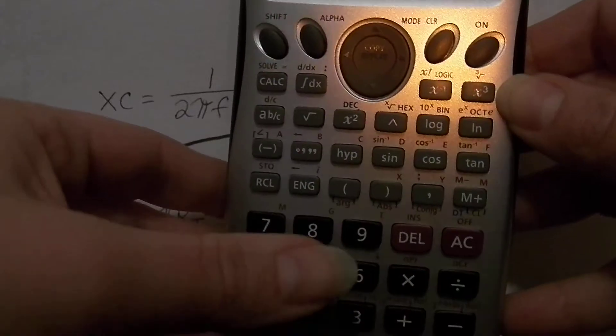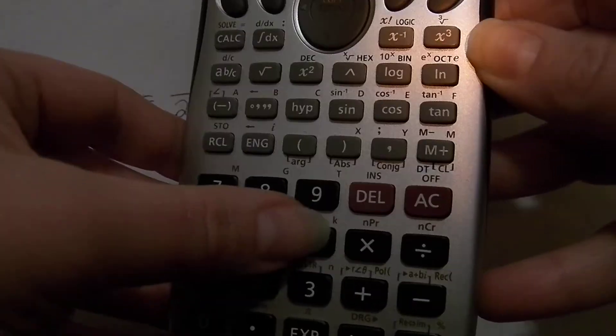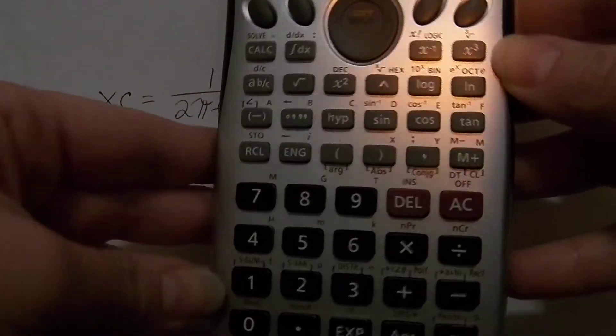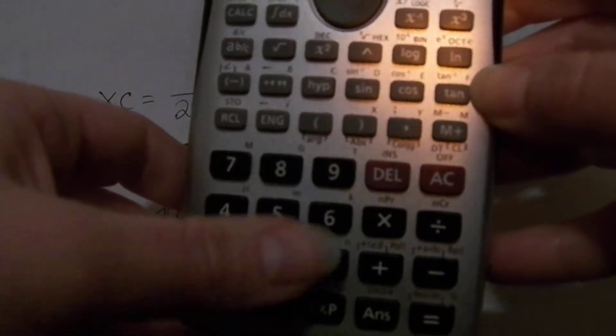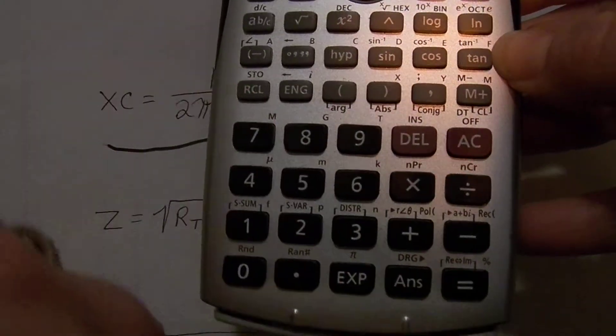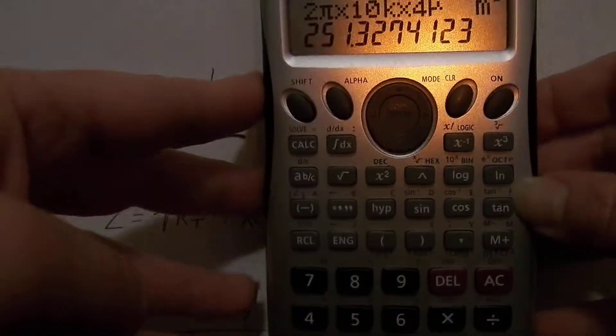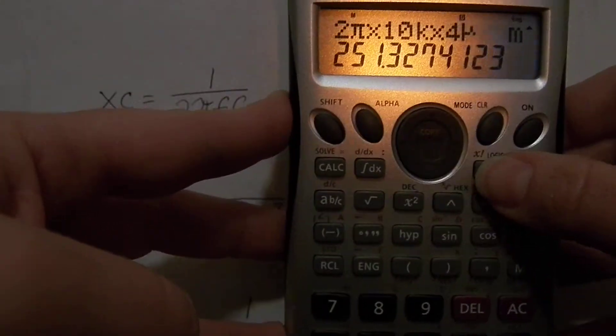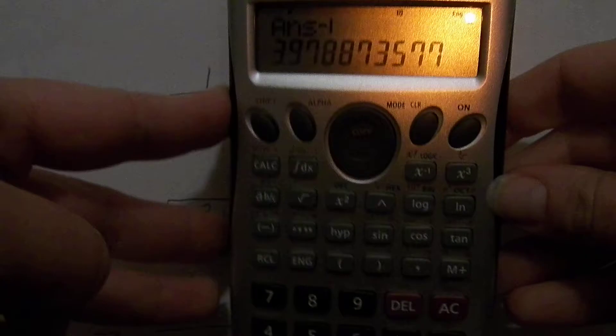Shift, and our k is right there, and then times 4 micro. So we're going to shift again, and our micro, of course, is right there above our 4. We're going to hit equals and then we're going to do x^-1, equals, and there we go.